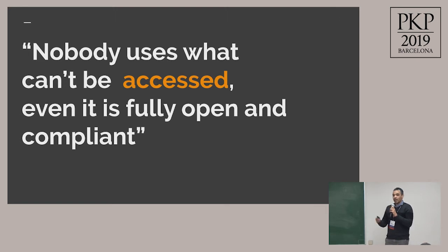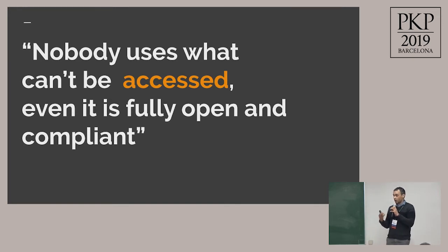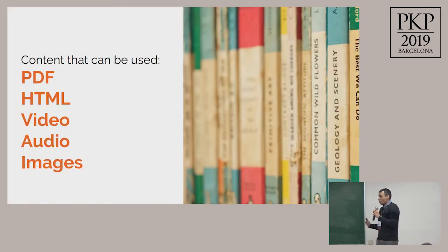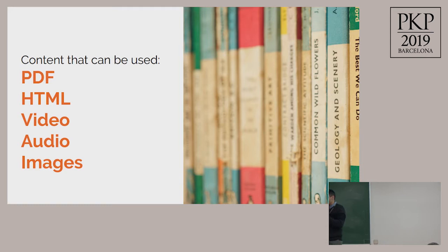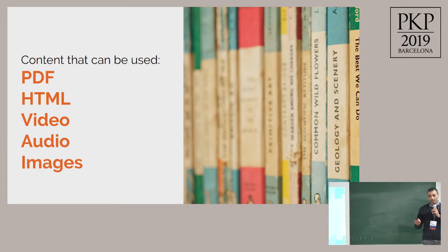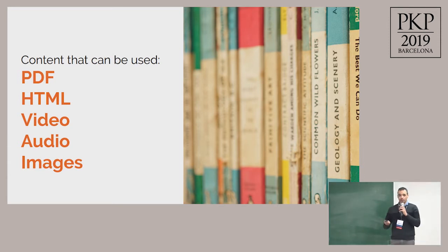I'm working with PKP as a liaison for accessibility and UX research. We are trying to figure out how to be not just compliant, but how we can assess our interface. What content can be used in a journal currently? We have PDF galley, HTML journal galley, video, audio, images. All this content can be provided as open access content.